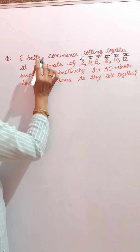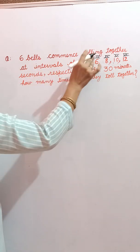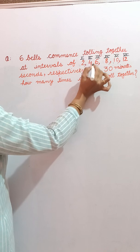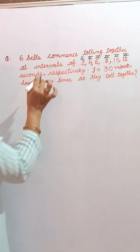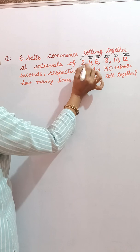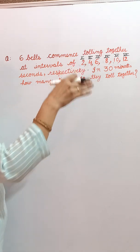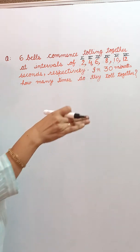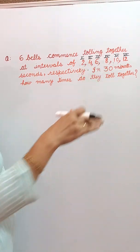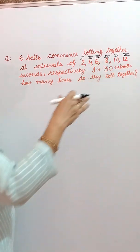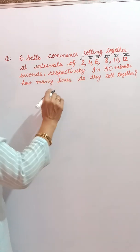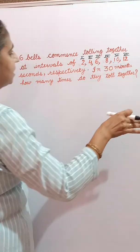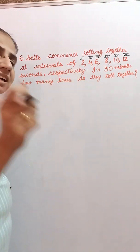Six bells are at intervals of two, four, six, eight, ten, and twelve seconds. The first bell rings at the interval of two seconds, the second at four seconds, the third at six seconds, the fourth at eight seconds. We have to find: in 30 minutes, how many times do they toll together?